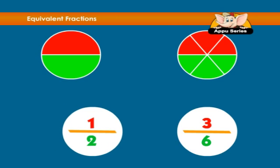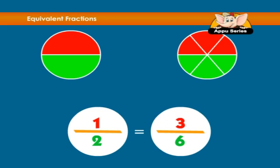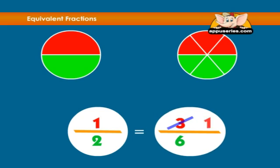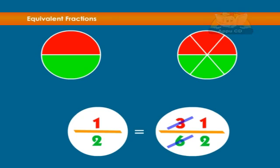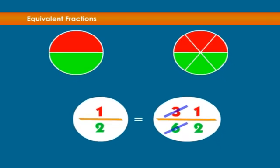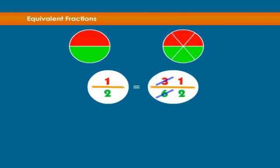Half equals three-sixths because three-sixths can be reduced to one-half. These are called Equivalent Fractions since they are equal amounts. Equivalent Fractions are different fractions which name the same amount.